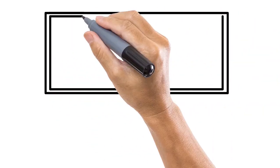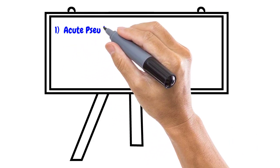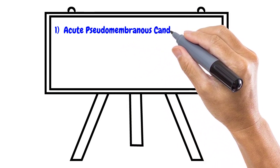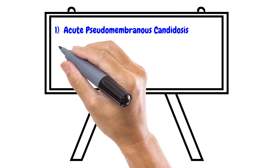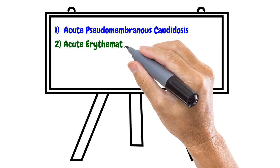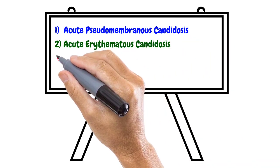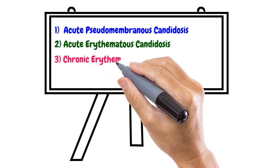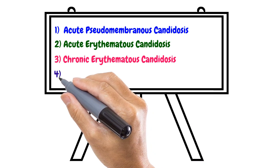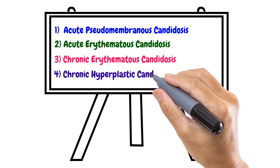There are four main types of oral candidosis. Number one: acute pseudomembranous candidosis, also known as thrush. Number two: acute erythematous candidosis, also known as antibiotic sore mouth. Number three: chronic erythematous candidosis, also known as denture stomatitis. And finally, number four: chronic hyperplastic candidosis, also known as candidal leukoplakia.